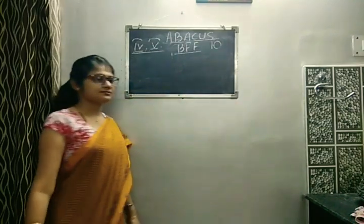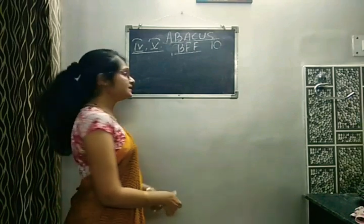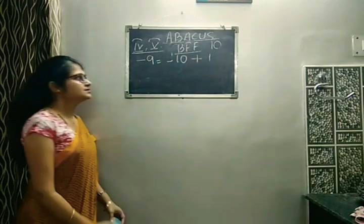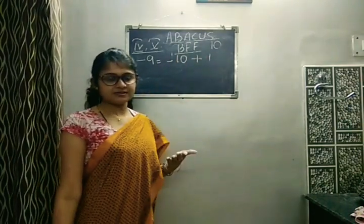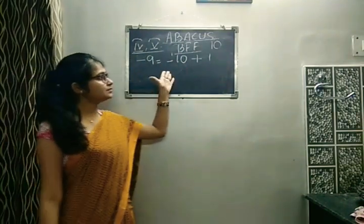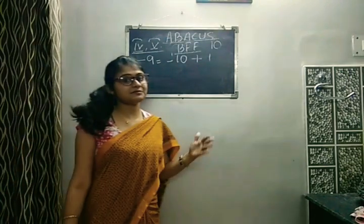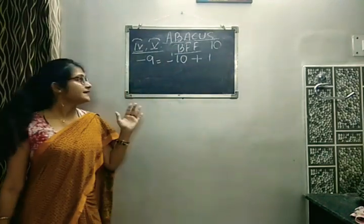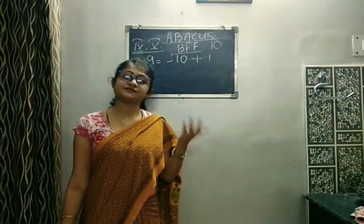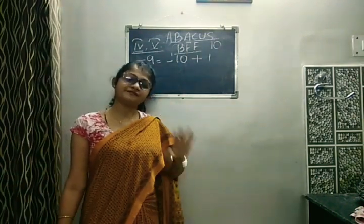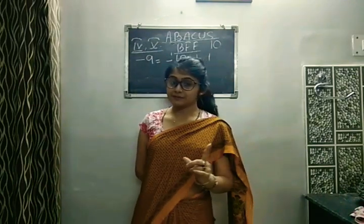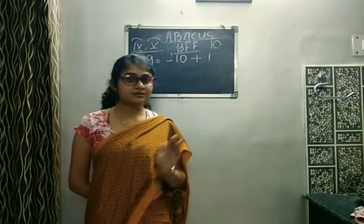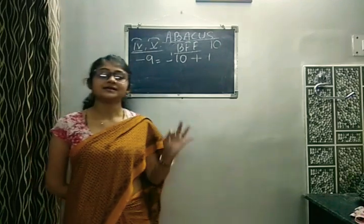Big friend formula minus also starts with a minus sign. The only difference is the common friend comes in front and the best friend goes back. Repeat with me: minus 9 equals minus 10 plus 1. Minus 8 equals minus 10 plus 2. Minus 7 equals minus 10 plus 3. Minus 6 equals minus 10 plus 4. Minus 5 equals minus 10 plus 5. Minus 4 equals minus 10 plus 6. Minus 3 equals minus 10 plus 7. Minus 2 equals minus 10 plus 8. And minus 1 equals minus 10 plus 9.